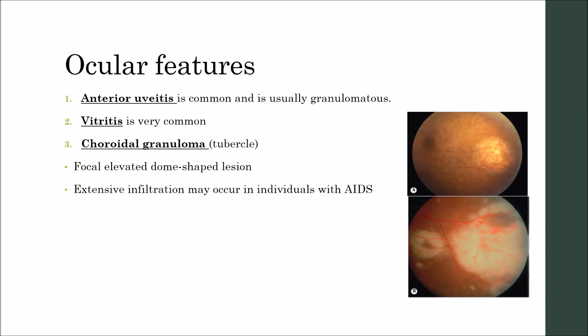Choroidal granuloma or tubercle can form, presenting as a focal elevated dome-shaped lesion, as shown in the figure. Here is a single focal elevated dome-shaped lesion as I am encircling it. It may be unilateral or bilateral, solitary or multiple.